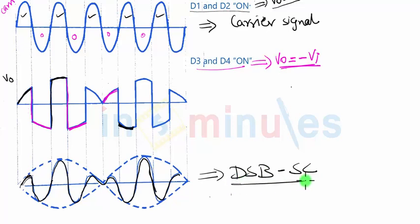The double sideband suppressed carrier signal looks exactly like this. This was discussed in the previous video clips.